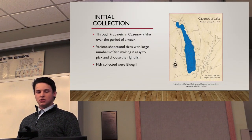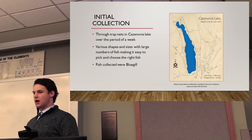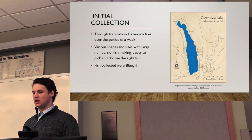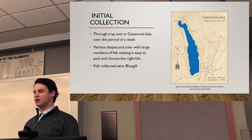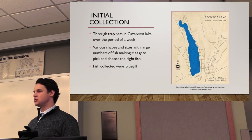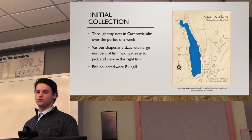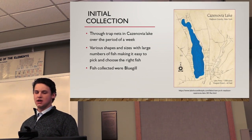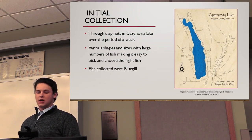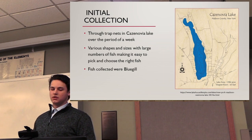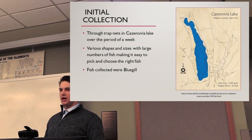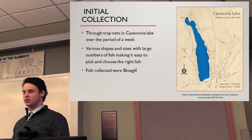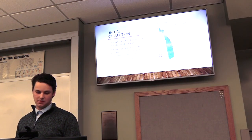For my initial collection, I collected fish through trap nets at Caslake over a period of about a week or so. A lot of the fish came in various shapes and sizes, which made it easy to pick and choose. A lot of them correlated in the same weight and size. The best fish I thought to use were bluegill, as a lot of the other fish had restrictions and regulations on them.